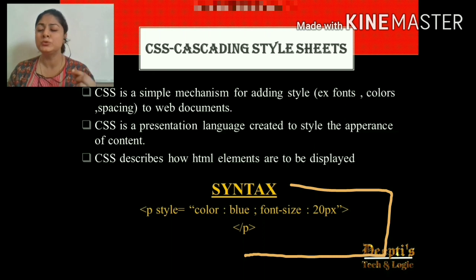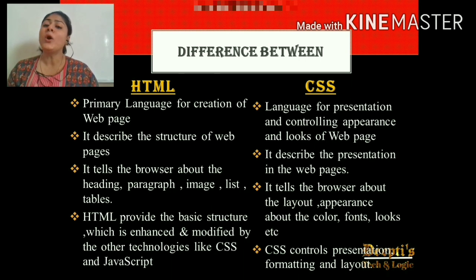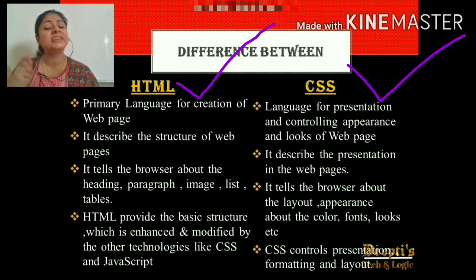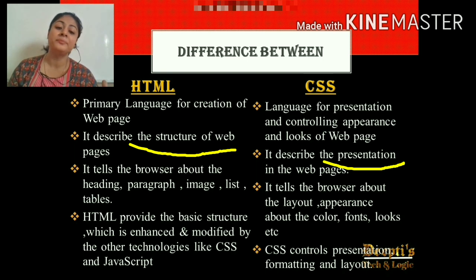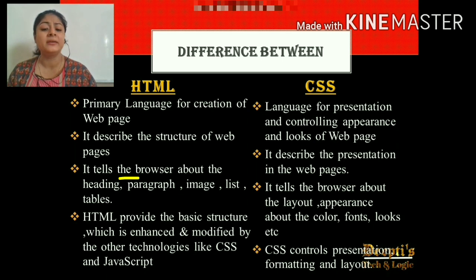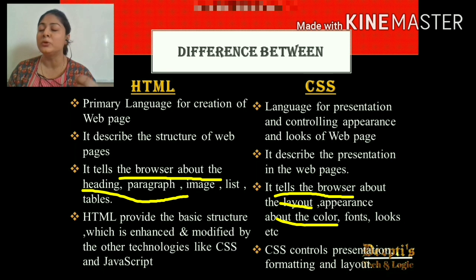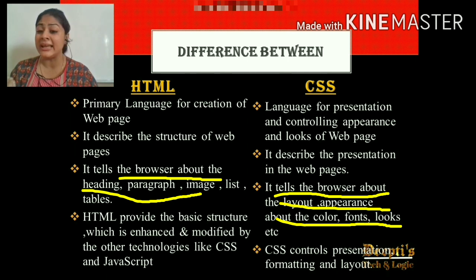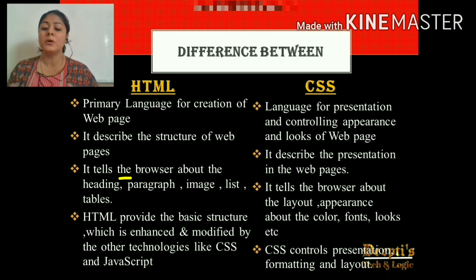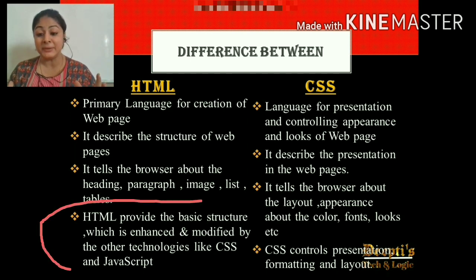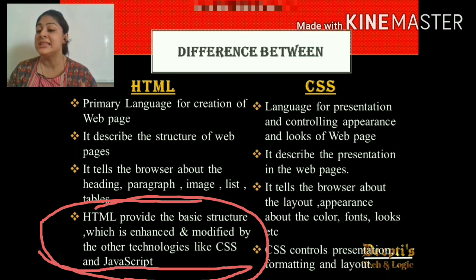What is the difference between HTML and CSS? HTML is the primary language for the creation of web pages. CSS is used for presentation and controlling the appearance of web pages. HTML provides structure; CSS describes presentation. HTML tells the browser about headings, paragraphs, images, and lists. CSS tells the browser about layout, appearance, colors — like red font, Times New Roman, or Arial. HTML tells the browser to use an image, but where to position it and whether to add a border is possible because of CSS. In simple terms, HTML provides the basic structure, which is enhanced and modified by CSS and JavaScript.